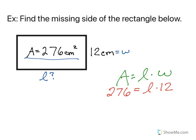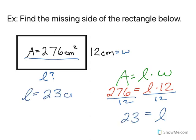Now it's a matter of solving an equation. To get the length by itself, we will divide both sides by 12. So 276 divided by 12 gives me a length of 23, and therefore the length is 23 centimeters.